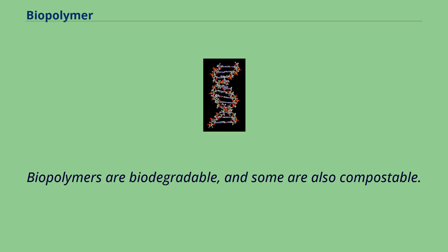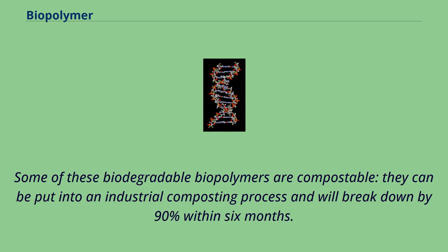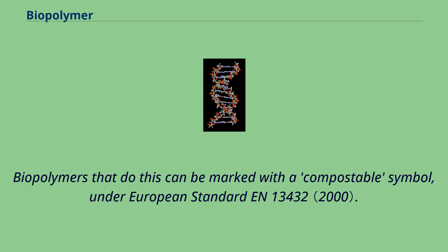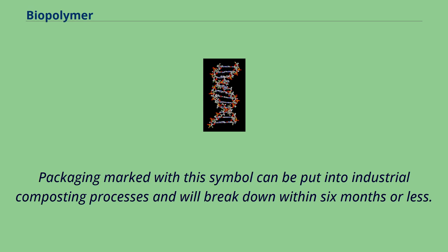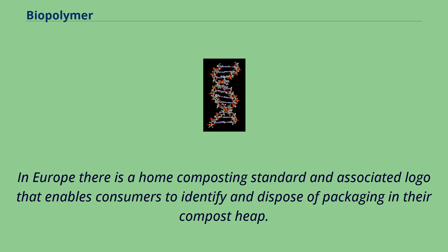Biopolymers are biodegradable, and some are also compostable. Some biopolymers are broken down into CO2 and water by microorganisms. Some of these biodegradable biopolymers are compostable — they can be put into an industrial composting process and will break down by 90% within 6 months. Biopolymers that do this can be marked with a compostable symbol under European standard EN13432. Packaging marked with this symbol can be put into industrial composting processes and will break down within 6 months or less. An example of a compostable polymer is PLA film under 20 micrometers thick; films thicker than that do not qualify as compostable, even though they are biodegradable. In Europe there is a home composting standard and associated logo that enables consumers to identify and dispose of packaging in their compost heap.